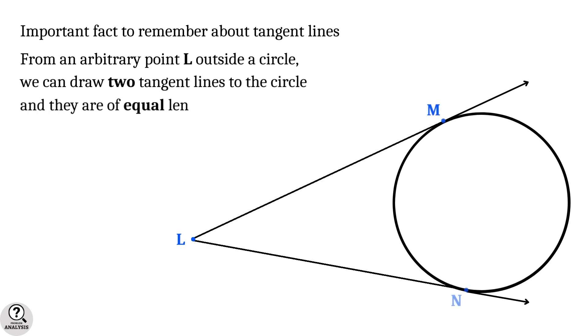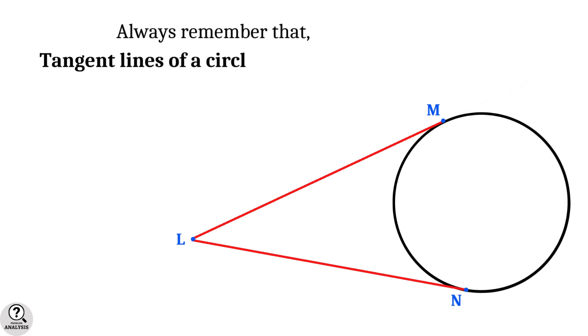And the fact is that they are equal in length up to the touching points. That is, in this diagram the lines LM equal to LN. To sum up, the tangent lines of a circle drawing from a single point are equal in length up to their touching points.